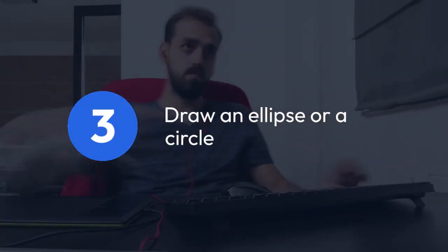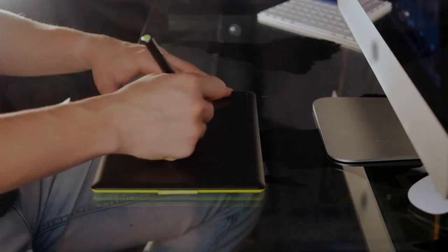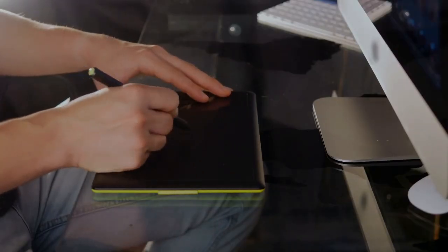Draw an ellipse or a circle. The shape of your ellipse will determine how your text curves. Make it as big or as small as you need, depending on how tightly you want the text to curve.